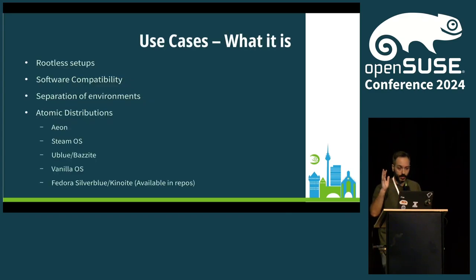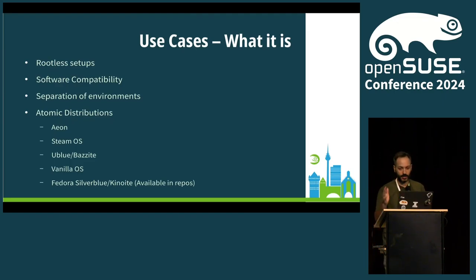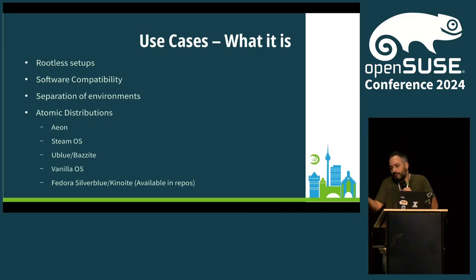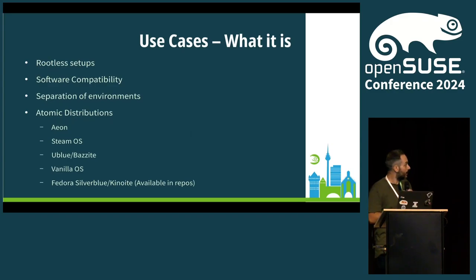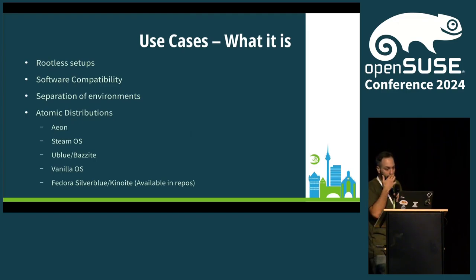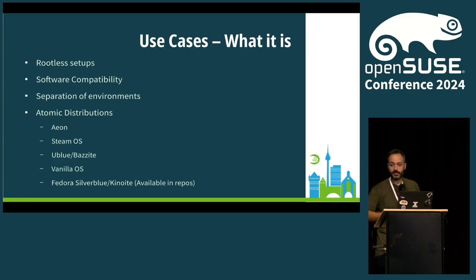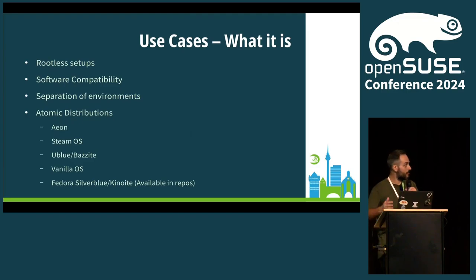DistroBox is aimed at rootless setups. It was born when I was working for a company and they gave me a laptop without sudo, and I needed to work — so I started ideating this. It's good for software compatibility, with a pretty big compatibility image list going all the way back to CentOS 7 and all the way to Tumbleweed, Arch, and Fedora. It's quite wide and diverse compatibility.